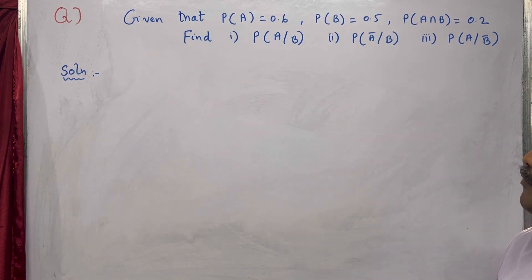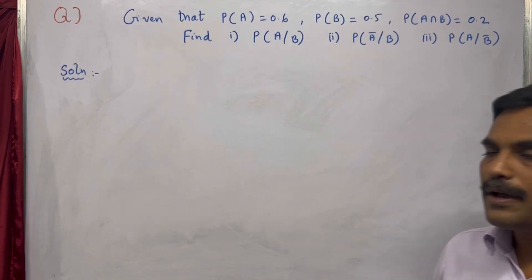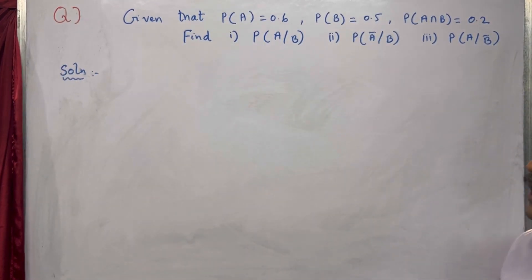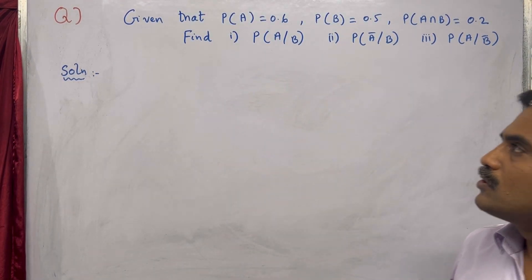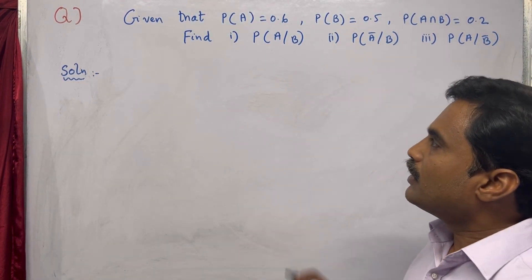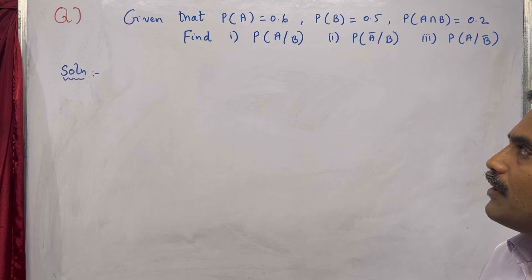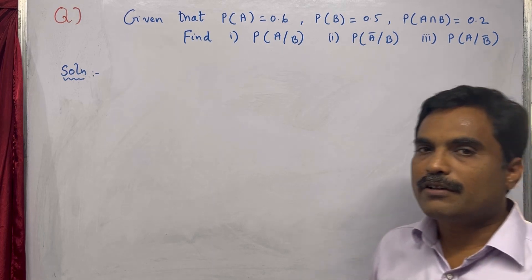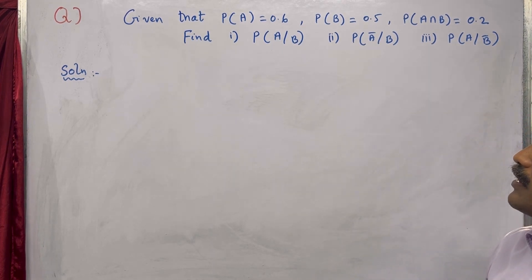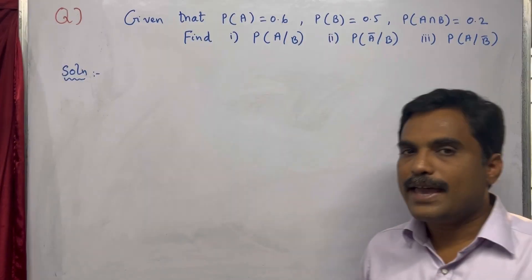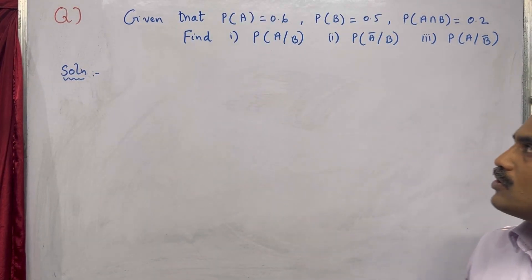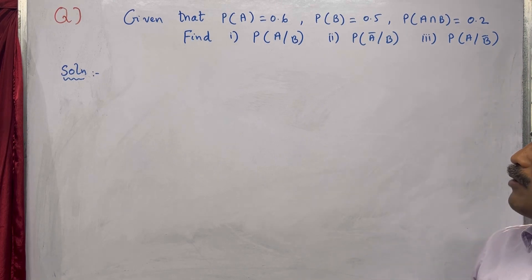The second one is P(Ā|B), and the third one is P(A|B̄). So here, if you observe this problem, what they have given is the values of P(A), that is probability of A, P(B), probability of B, and P(A∩B). You need to find P(A|B), P(Ā|B), and P(A|B̄).